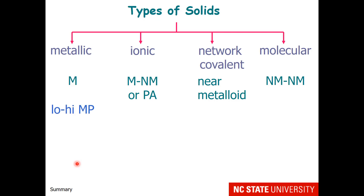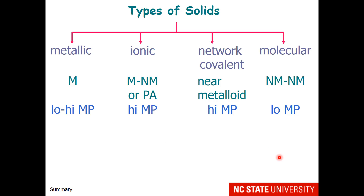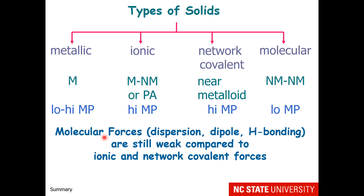Metallic melting points have a wide variety, from low to high. Ionic solids almost always have high melting points, as do network covalent solids. Molecular solids have low melting points relative to ionic and network covalent solids, because molecular forces — which are dispersion, dipole, and H bonding — are weak compared to ionic and network covalent forces.